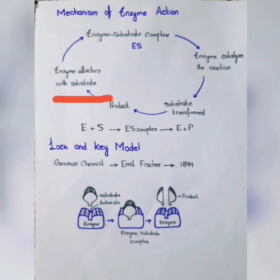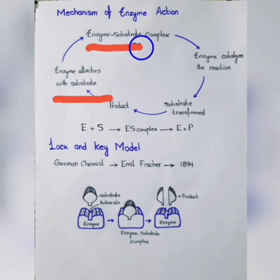The enzyme attaches to the substrate temporarily. When they are attached, they form a complex that we call the ES complex. The ES complex stands for enzyme-substrate complex, which is formed when the enzyme is temporarily attached with the substrate.